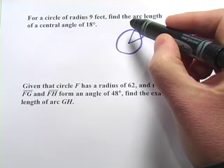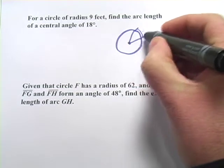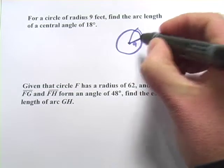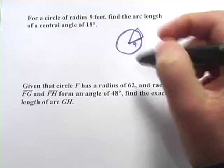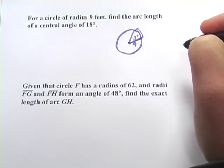It says for a circle of radius 9 feet, so from the center out to the edge is 9 feet, find the arc length of a central angle of 18 degrees. So let's say this was 18 degrees, our central angle.